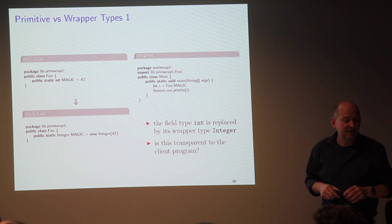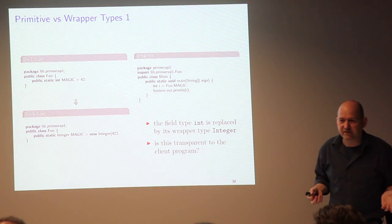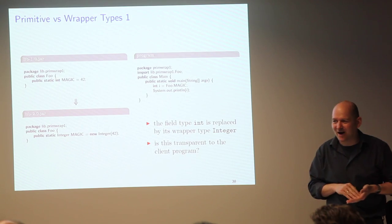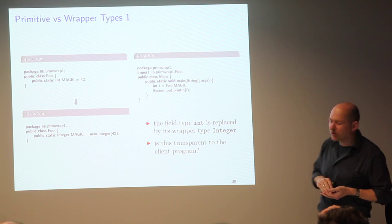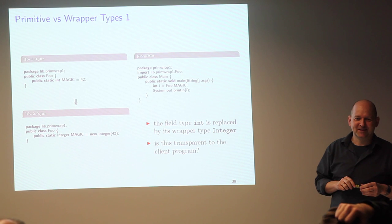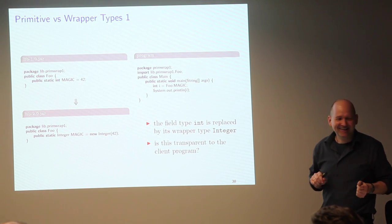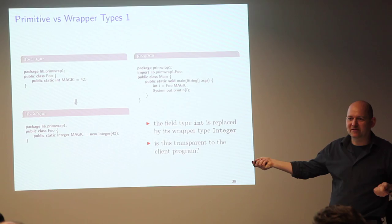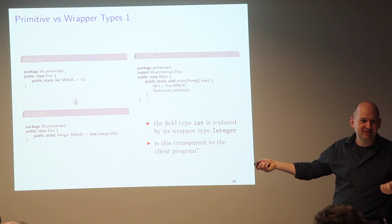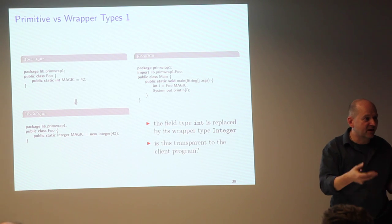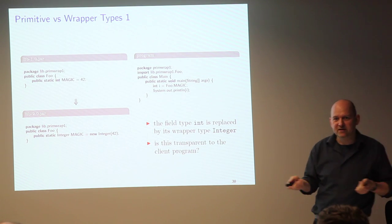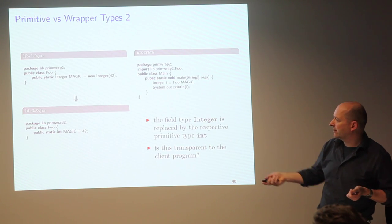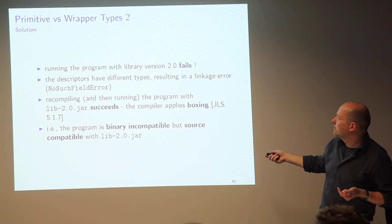Primitives versus wrapper types. Auto-boxing and auto-unboxing is a source-level feature from Java 5, but what about binary compatibility? If you change an int to Integer, it breaks binary compatibility — there's no adapter at the linker level equivalent to boxing/unboxing. You get a NoSuchFieldError. It also breaks if you go the other way. In both cases, binary compatibility is broken.